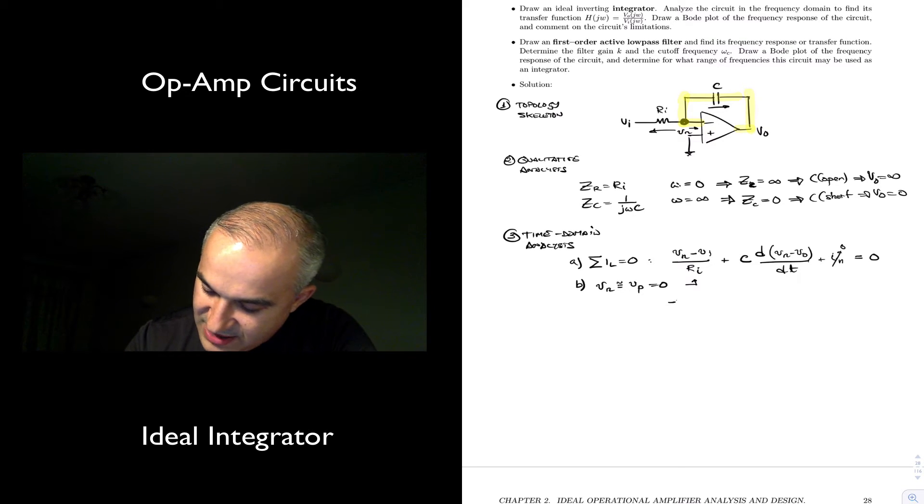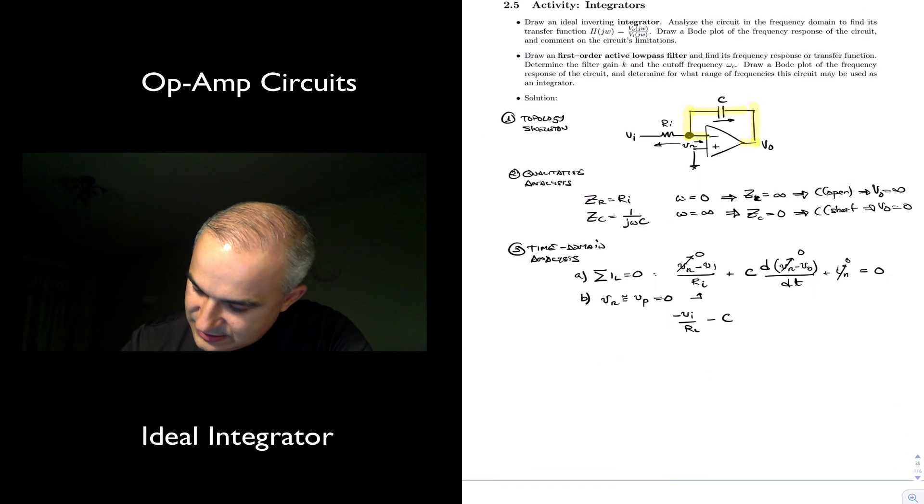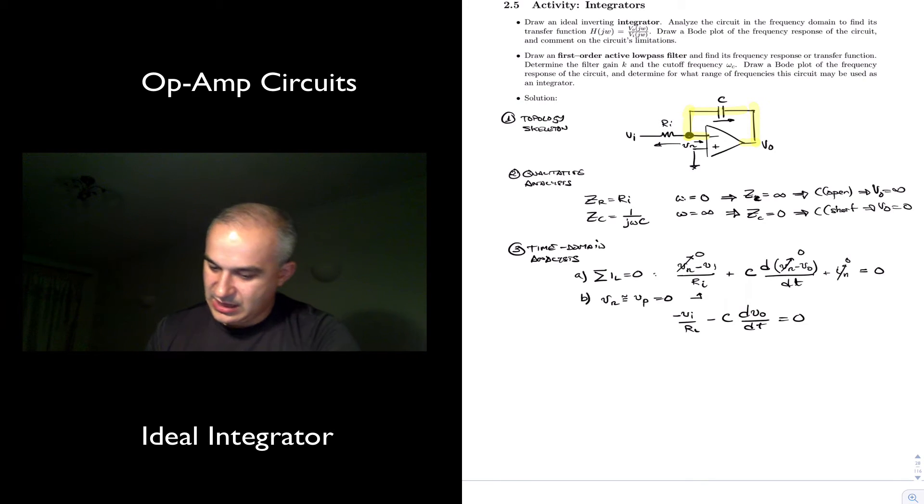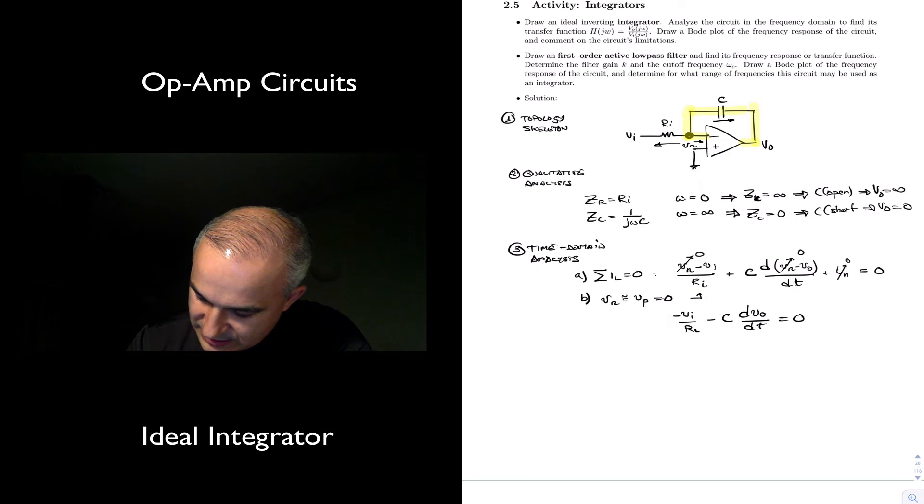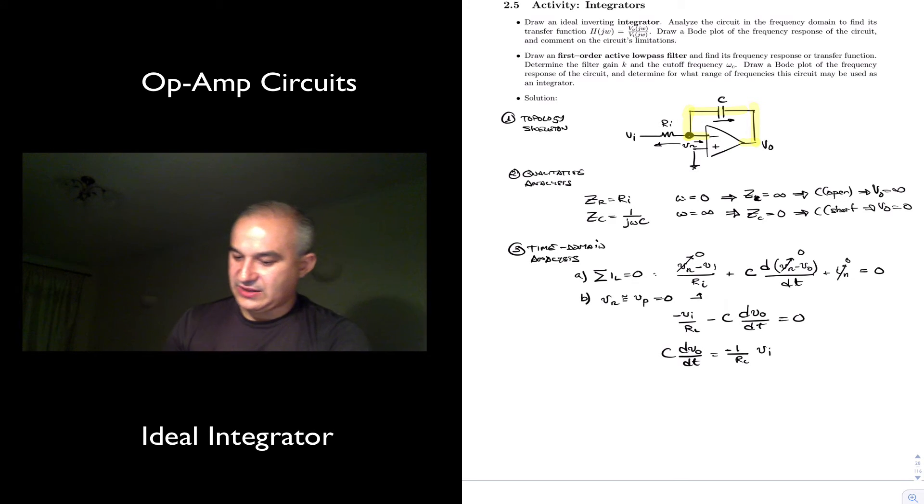So what do we get? We get that minus Vi over Ri minus C, this is zero, this is zero, and to take the minus out, minus the derivative of the output voltage with respect to time is equal to zero, or that C dV/dt equals to 1 over Ri times minus the input.